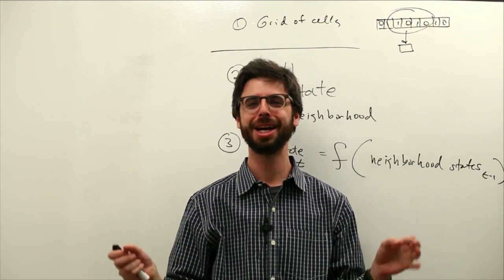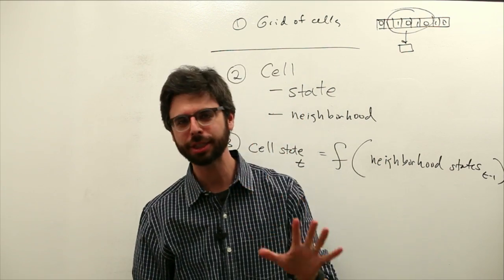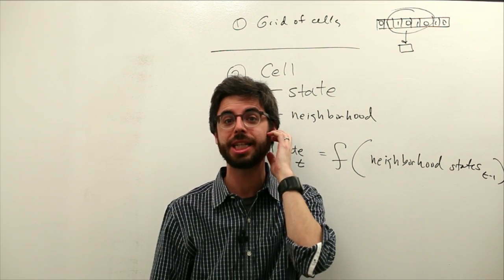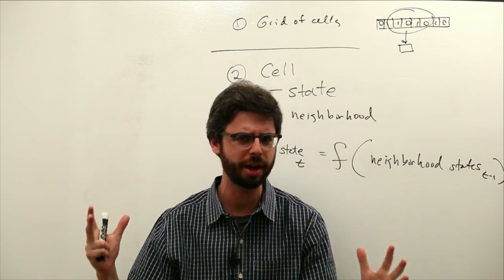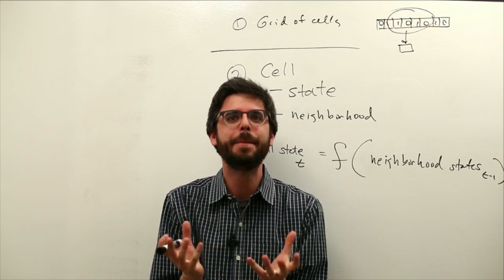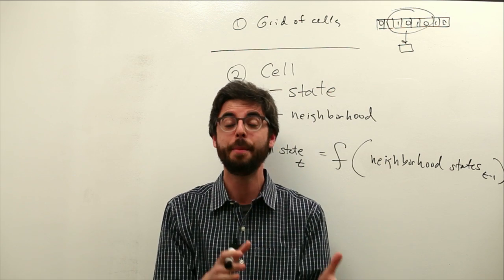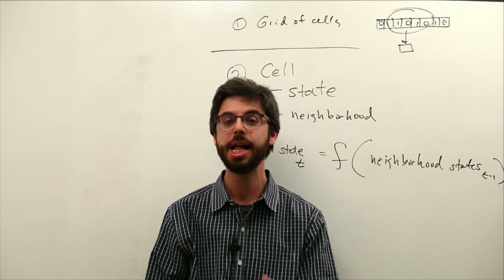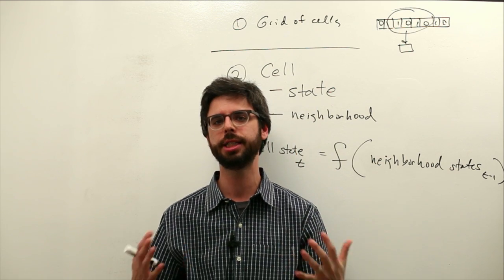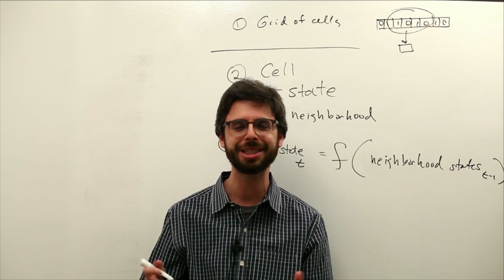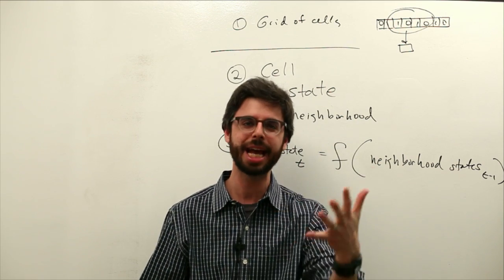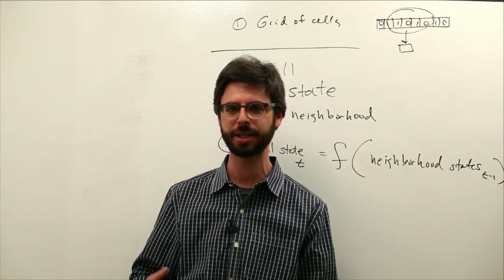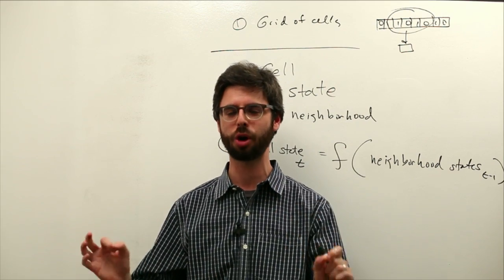We're ready to look at our first cellular automaton. CA has a rich history of work going back into the 1950s with John von Neumann and Stanislaw Ulam. There are all sorts of interesting beginning uses of this idea of modeling behavior through CA-like principles. We're going to look at the Game of Life, a very well-known CA from the 70s, in a later set of videos. We're going to start towards the end of this history and look at the work of Steven Wolfram.